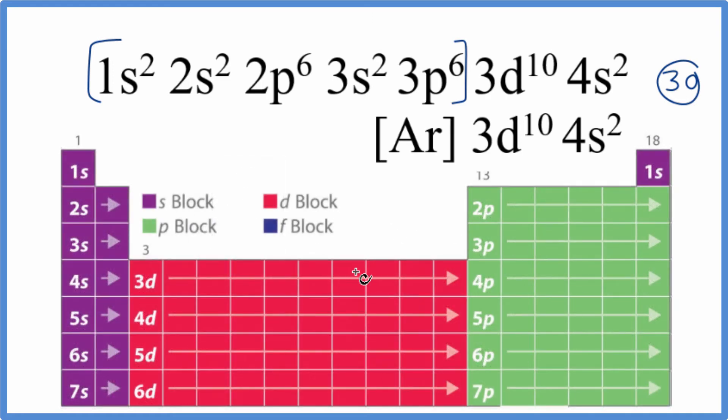So here's our periodic table broken up into orbital blocks. We have the s, the d block, the p block, the f block is down here.